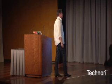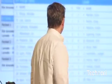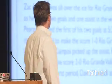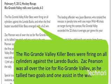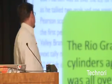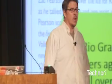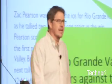Which is to say, we take data like this. This is data describing, as you can see, a youth hockey game. There's the team data, the game data, some seasonal data, data about other teams. We take this data and we turn it into this — a game recap written in natural language, in English, that is absolutely indistinguishable from a piece of text that would be written by a human being. When you read 'the Rio Grande Killer Bees were firing on all cylinders against the Laredo Bucks, Zach Pearson was all over the ice for Rio Grande Valley as he tallied two goals and one assist in the win' — it was all written by a machine that looked at the data, figured out what was going on in the world, and then explained it to you.